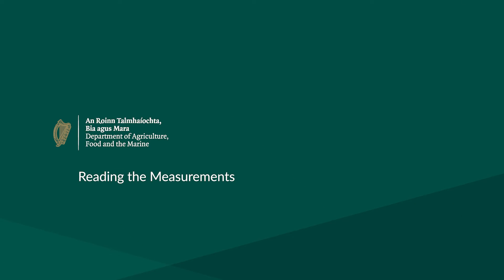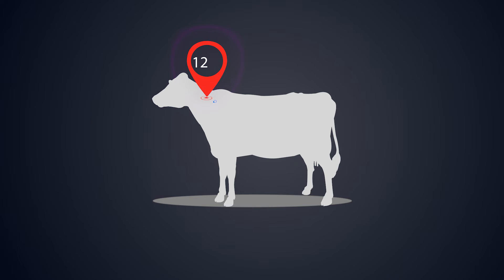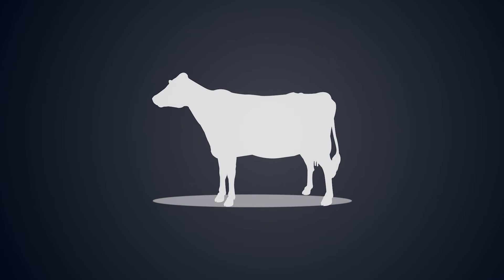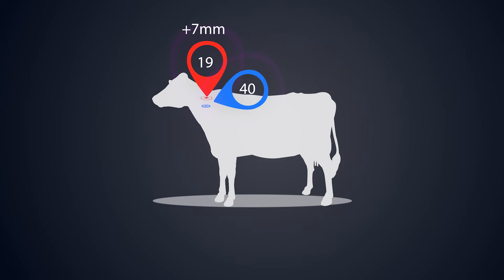Animal number 85 had first-day skin fold measurements of 12 mm at the avian injection site and 16 mm at the bovine injection site. Examination of the injection sites 72 hours later reveals a small circumscribed swelling at the avian site and a diffuse edema extending into the subcutaneous tissue at and below the bovine site. Measurement of the avian injection site is 19 mm — an increase of 7 mm. Measurement of the bovine injection site is 40 mm — an increase of 24 mm. Since the reaction at the bovine injection site is 17 mm more than the avian site, this animal is deemed a reactor. Additionally, as it exhibits clinical signs — in this case exudation and edema at the bovine injection site — it must be deemed a reactor regardless of skin fold measurements.